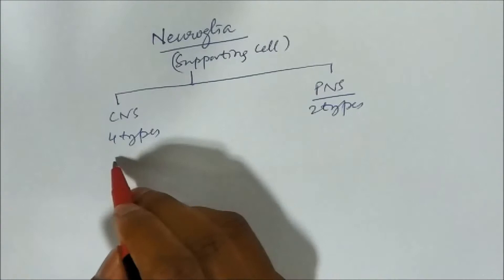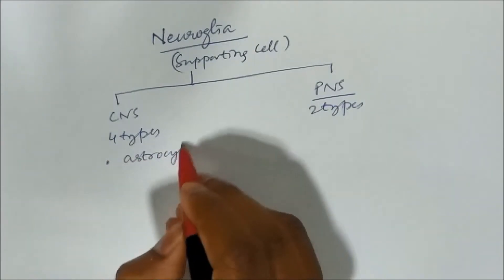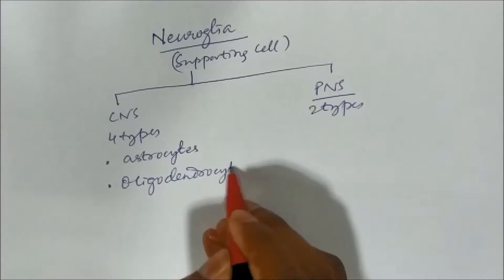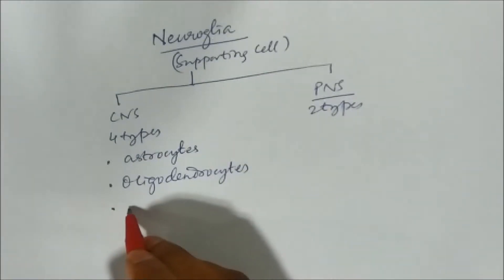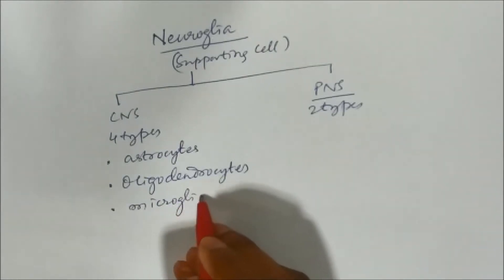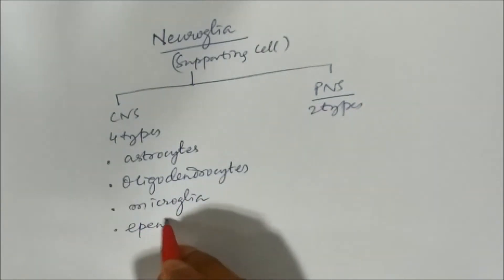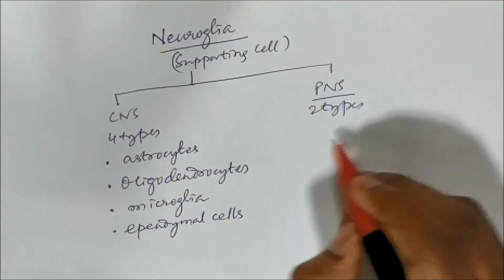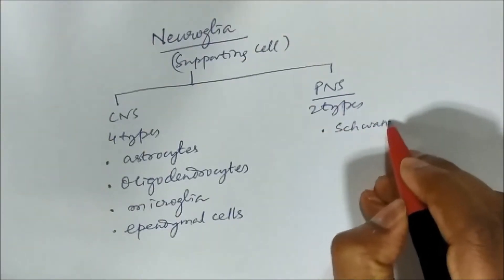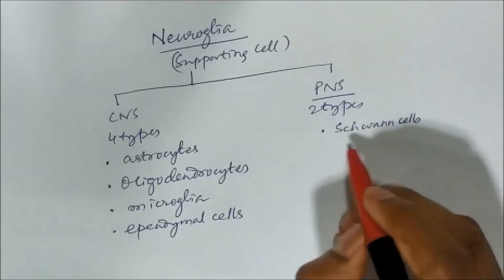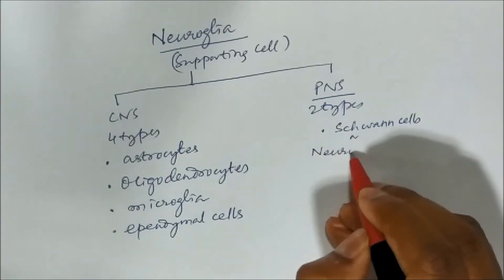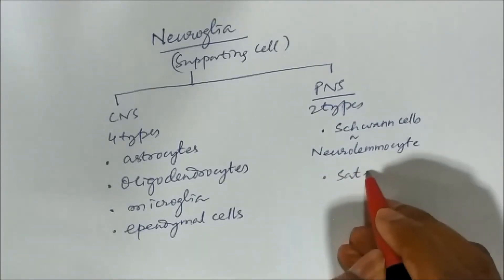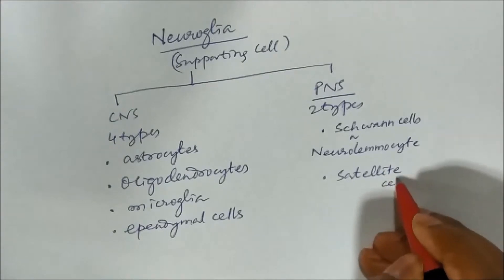The four types of neuroglia in the CNS are: astrocytes, oligodendrocytes, microglia, and ependymal cells. The two types of neuroglia in the PNS are Schwann cells — also known as neurolemmocyte cells — and satellite cells. They are called satellite cells because of how they are located.